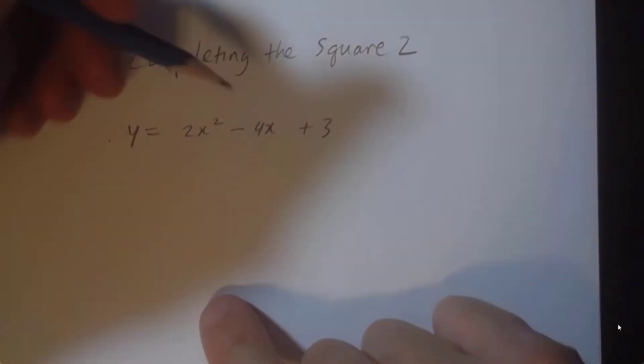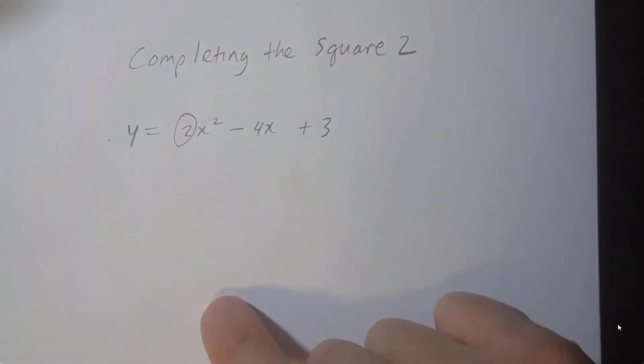Let's complete the square. We have a coefficient that's not 1. This is slightly harder.